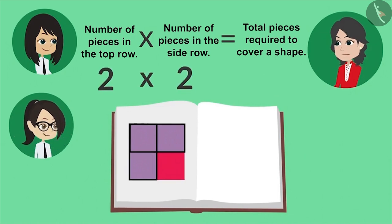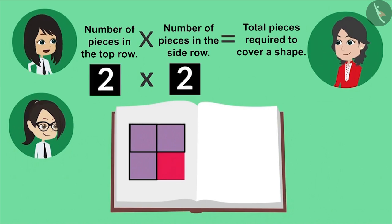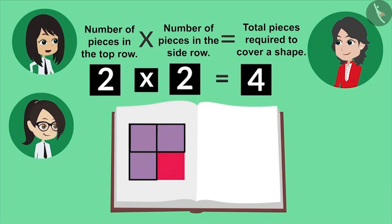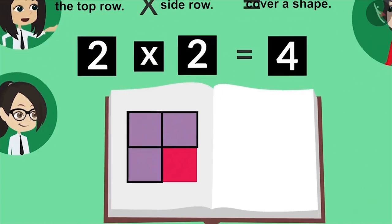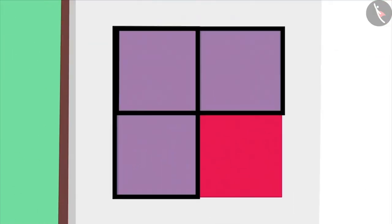Am I right? Yes. Multiplying two by two will give us four. That means four pieces are required to cover this shape. Yes.